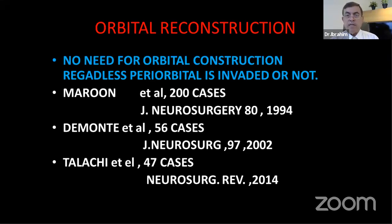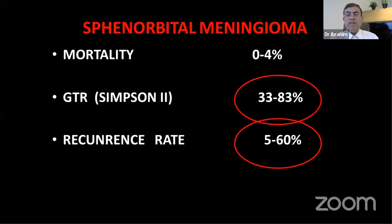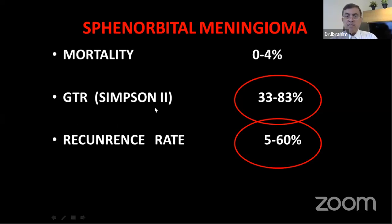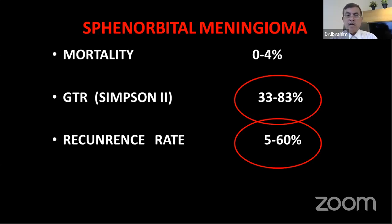Looking at the general publications, mortality is near zero to four percent. Gross total resection is Simpson grade two — you cannot speak about Simpson grade one here in the orbit, just as you don't speak about Simpson grade one in petroclival meningiomas. So gross total resection means Simpson grade two.